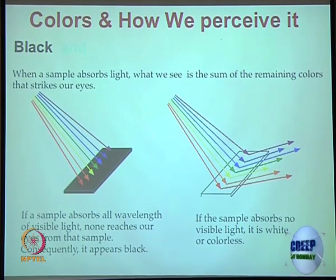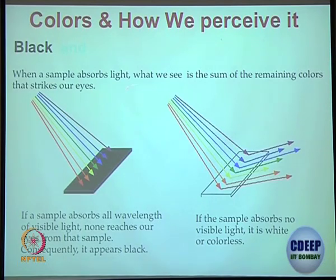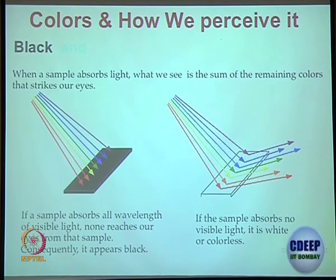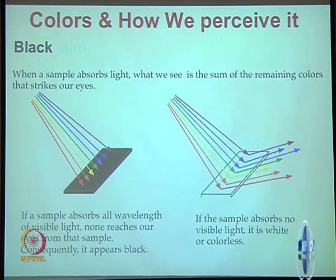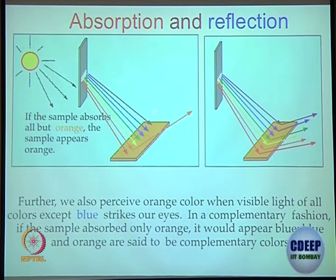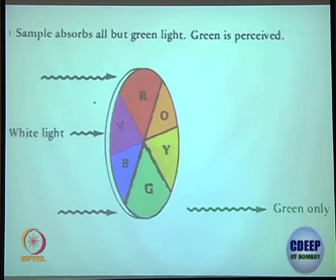You have learned in physics how we perceive color. Very briefly: if all colors are absorbed by a compound, it appears black; if nothing is absorbed it appears white. There is complementarity — if blue is absorbed by a species, all you see is orange; if orange is absorbed, all you see is blue. For example, if a sample absorbs all colors except green light, you see green. These are fundamental concepts you have studied before.